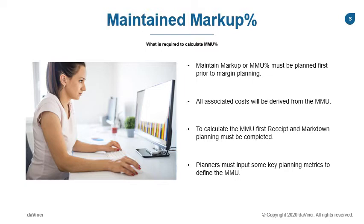As previously mentioned, gross margin planning only takes into account merchandise-related expenses, such as receipts and permanent markdowns. Specific metrics are inputted and planned by the planners to calculate the MMU percent, which will then update all the associated cost calculations.